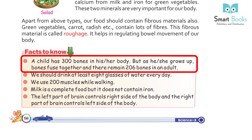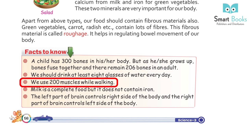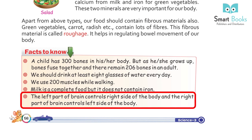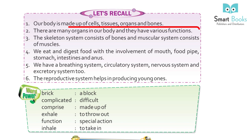Facts to know: a child has 300 bones, but as they grow up, bones fuse together and there remain 206 bones in an adult. We should drink at least eight glasses of water every day. We use 200 muscles while walking. Milk is a complete food but it doesn't contain iron. The left part of the brain controls the right side of the body, and the right part controls the left side.